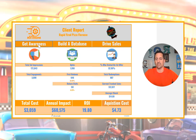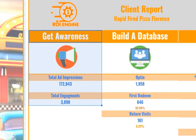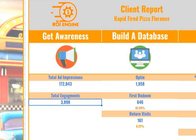Our program has three main elements: getting awareness, building a database, and driving sales. For awareness, we're using social media — organic and paid — to drive people to specific posts for certain actions. This client, over the past almost four months, has seen 172,043 impressions and 3,898 engagements. For one location restaurant in Florence, Kentucky, almost 4,000 people engaging with what we're putting in front of them is pretty impressive.